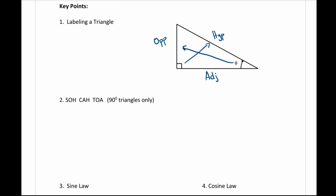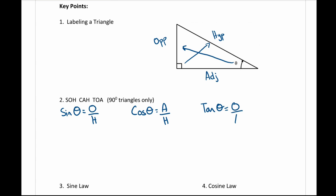When dealing with right angle triangles there are only three ratios we will use. We have sine — sine of theta equals opposite over hypotenuse. We also have cosine — cosine theta equals adjacent over hypotenuse. And finally we have tan — tan theta equals opposite over adjacent. These all refer to when we find a side.